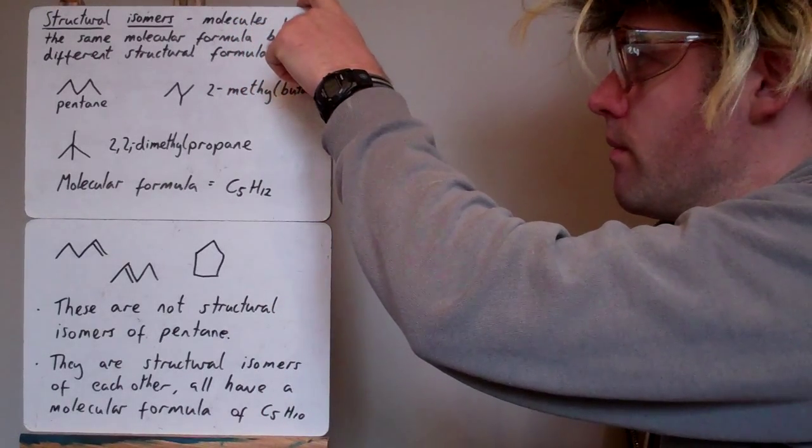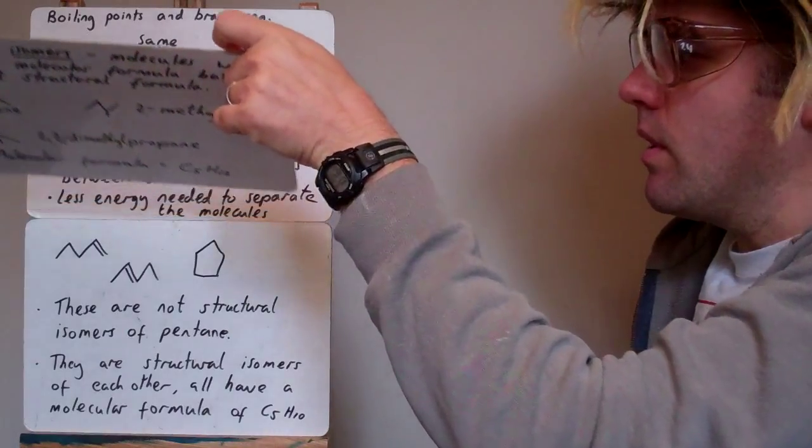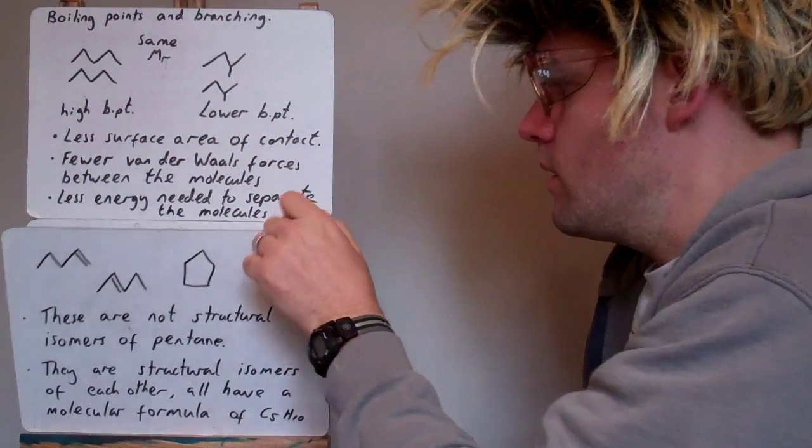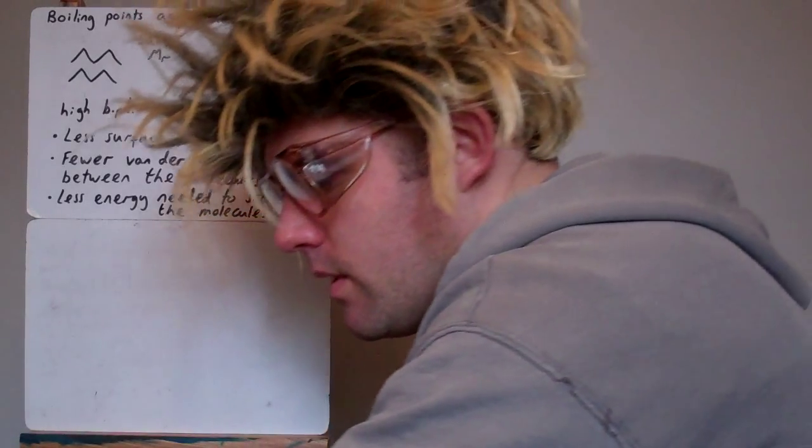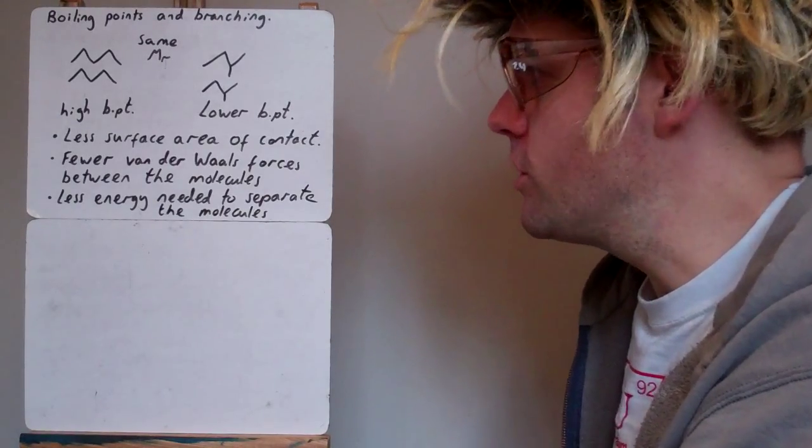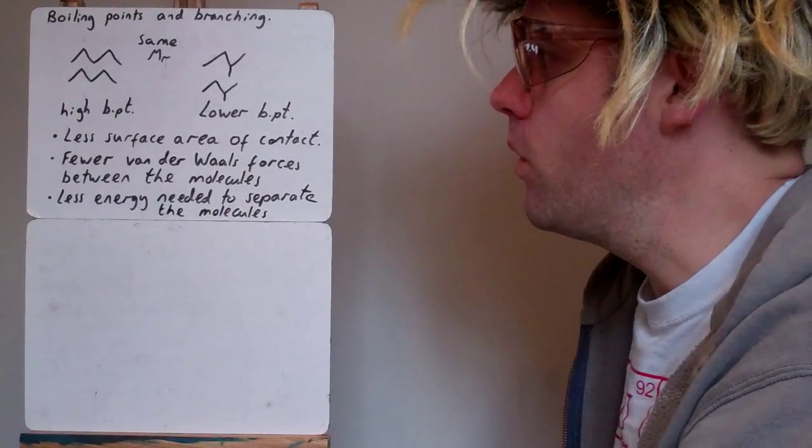So how does branching then, when you say branching, not having a straight chain, a branch coming off, how does that affect the boiling point?